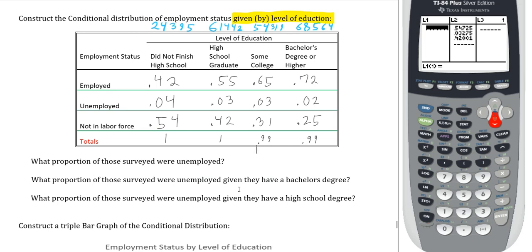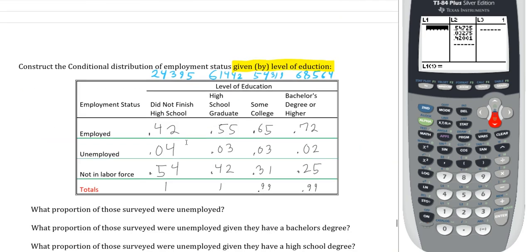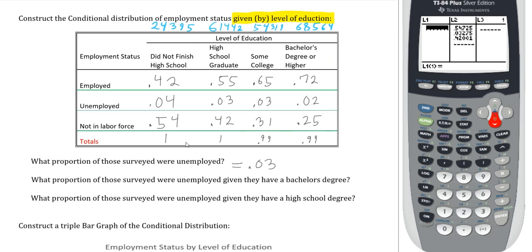Now answering specific questions. What proportion of those surveyed were unemployed? No condition given — that's just the overall 0.03 from the marginal relative frequency. What proportion were unemployed given they have a bachelor's degree? Looking at that education column in our conditional distribution table: 0.02. What proportion were unemployed given they had a high school degree? Looking at that column: 0.03.